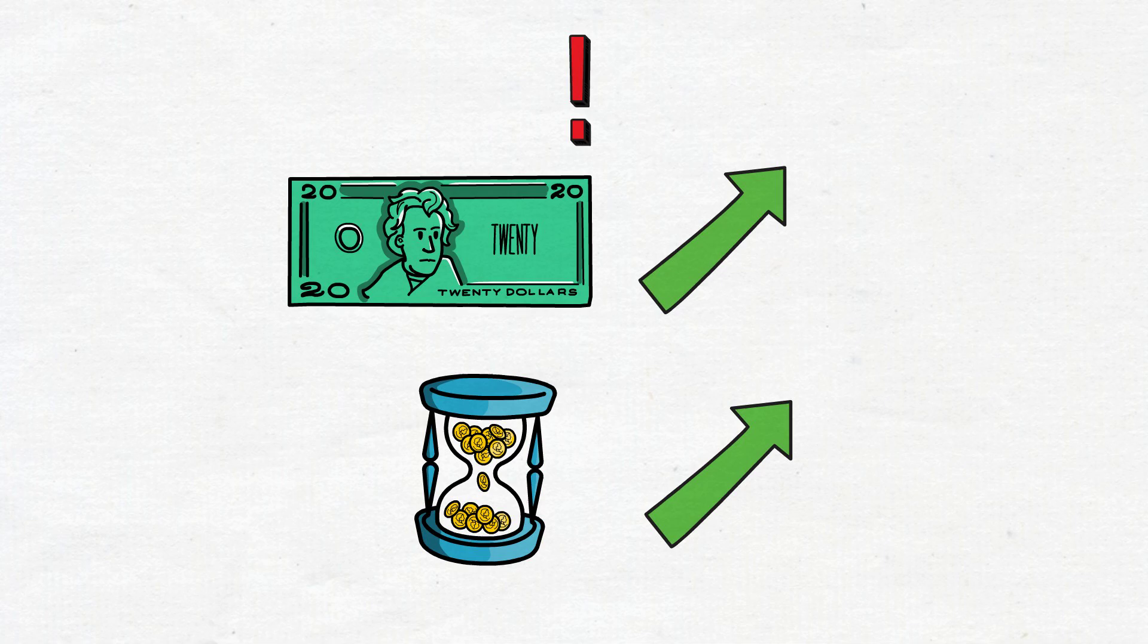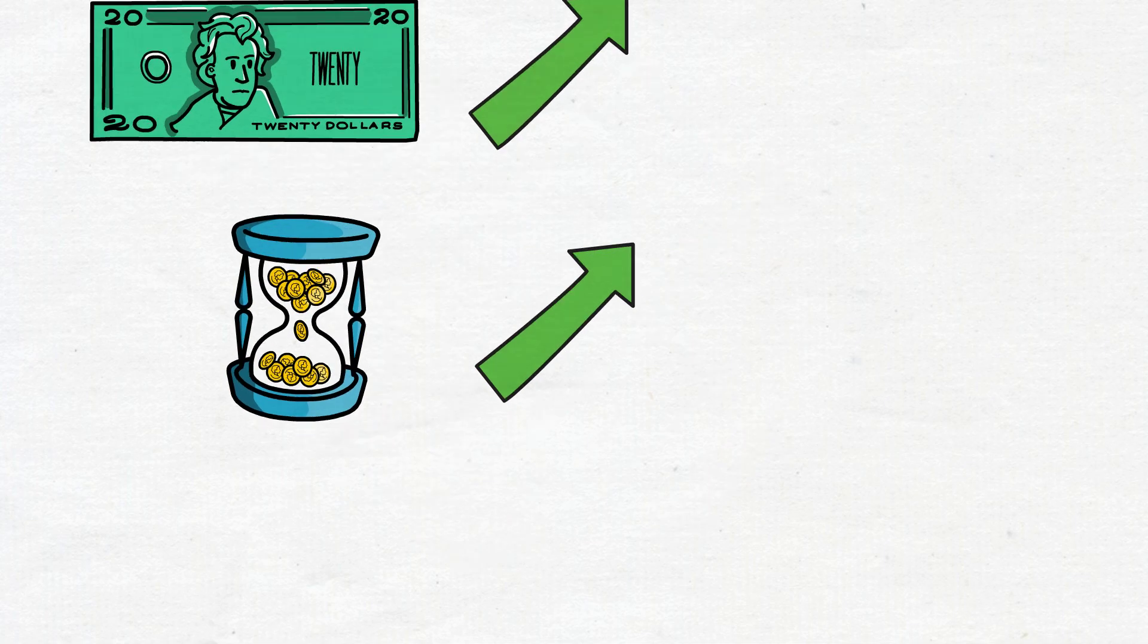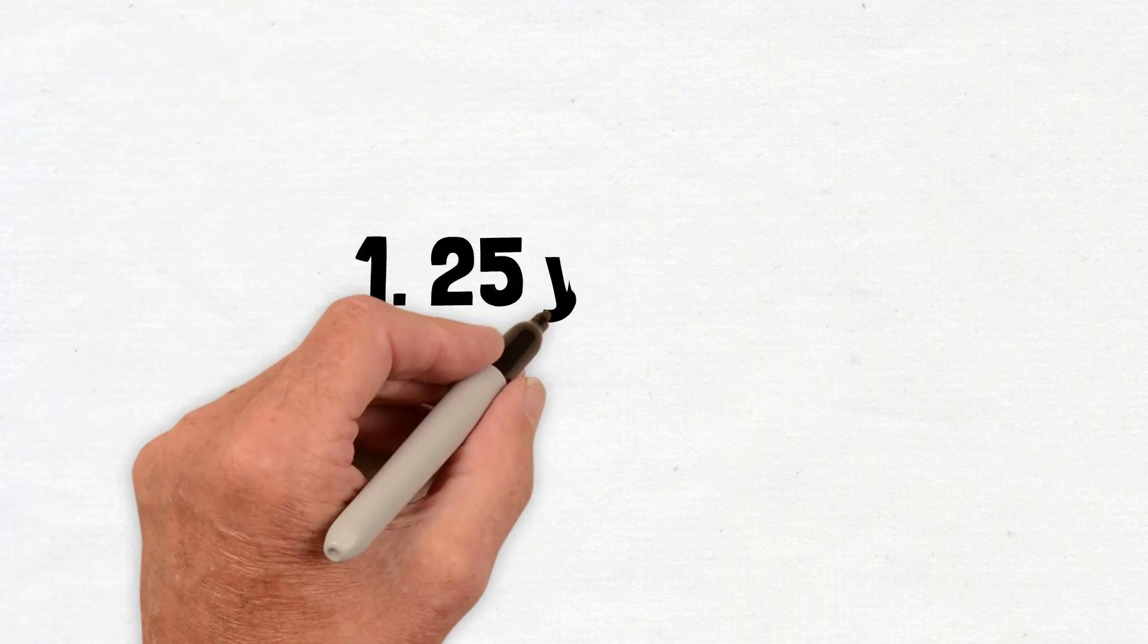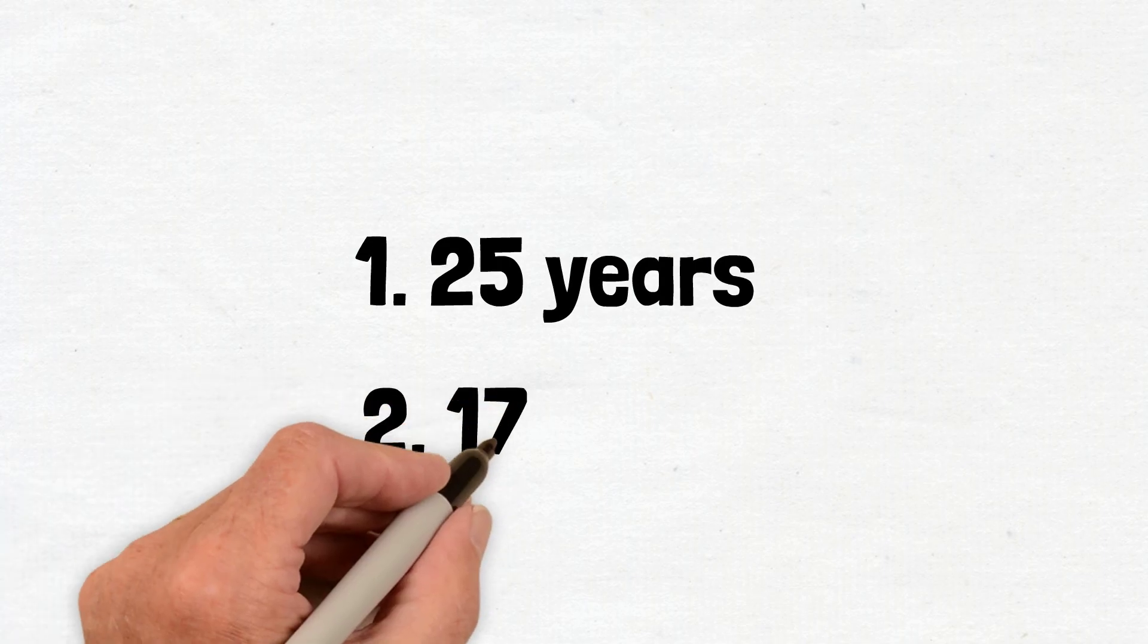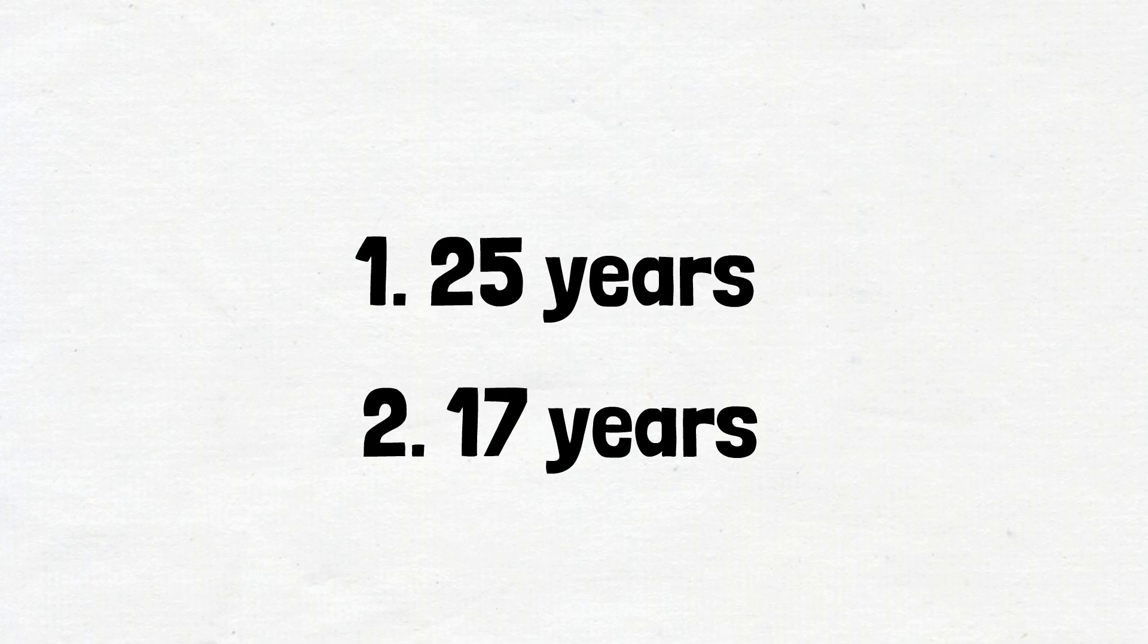How long will it take to go from $100,000 to $1,000,000 net worth? You can go from 100k invested assets to 1 million over a period of around 25 years, assuming 10% returns and no further contributions. With annual contributions of $10,000, this can be cut down to around 17 years.